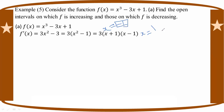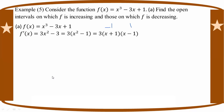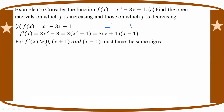The critical values are A equals minus 1 and A equals 1. F is increasing where F prime is positive, i.e., F prime greater than 0. F prime is 3 times A plus 1 times A minus 1, and we check the sign on each interval.